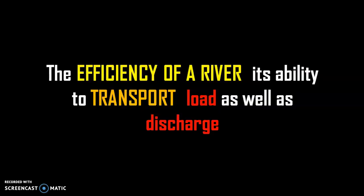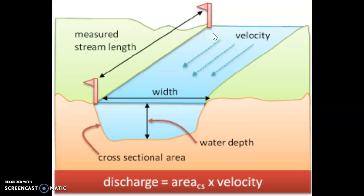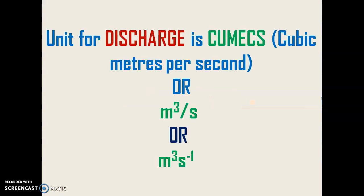In this definition of efficiency, apart from load, we also have discharge. The discharge refers to the volume of water that passes a particular point along a stream within a given period of time. Discharge is calculated by the cross-sectional area of the stream multiplied by the velocity. The unit for discharge is cubic meters per second — also referred to as cumecs — written as m³/s or m³s⁻¹.